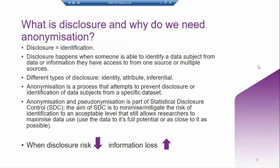Both anonymization and pseudonymization are part of SDC, or statistical disclosure control. SDC aims to minimize or mitigate the risk of identification to an acceptable level that will still allow researchers to maximize data use. One of the most important aspects to remember, especially if you're preparing to share data for reuse, is that when disclosure risk goes down — the more we anonymize — the more information we lose from that data.